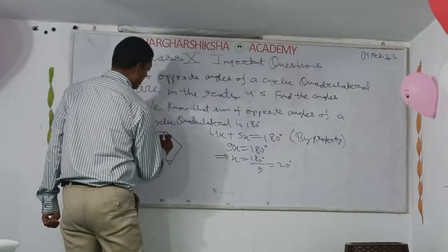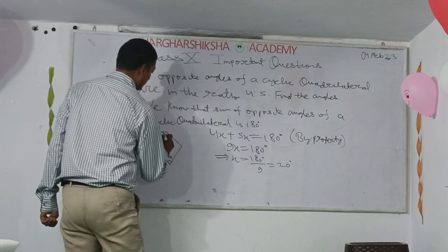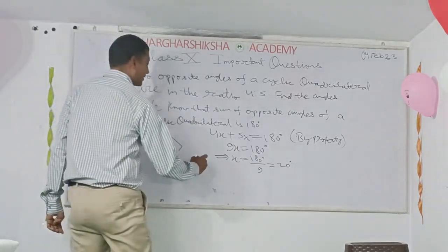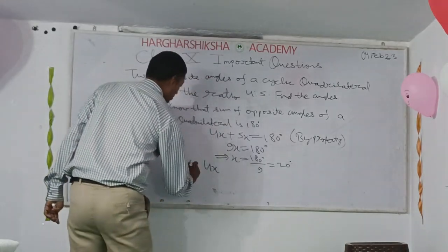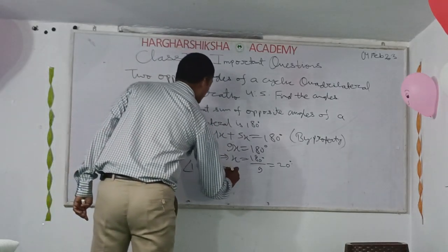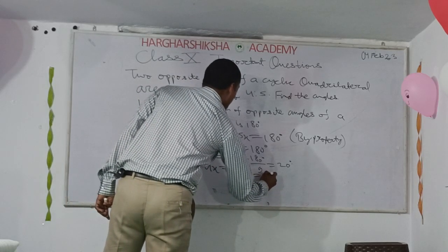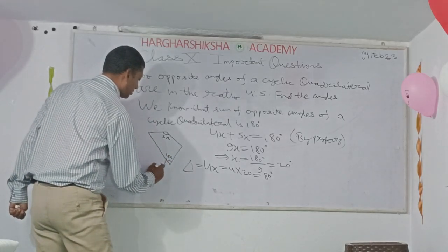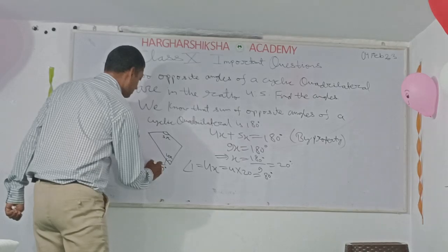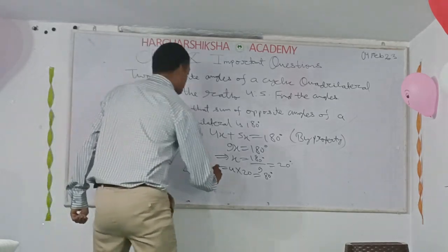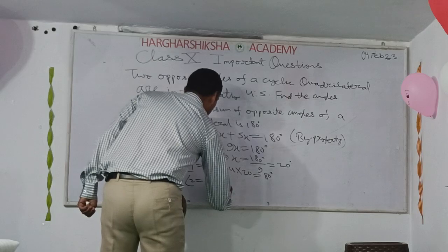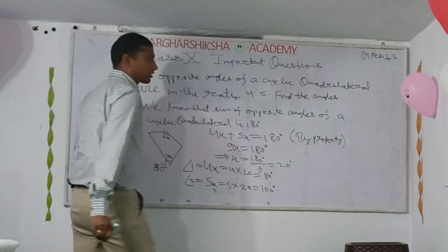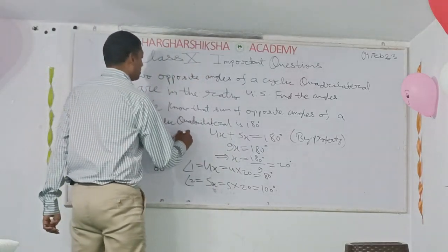The angles are 4x and 5x. Angle 1 is equal to 4x, which is 4 into 20, equal to 80 degrees. Angle 2 is equal to 5x, which is 5 into 20, equal to 100 degrees.